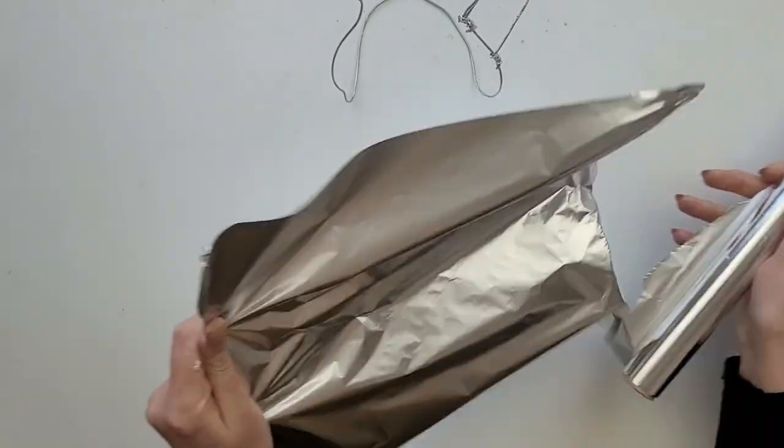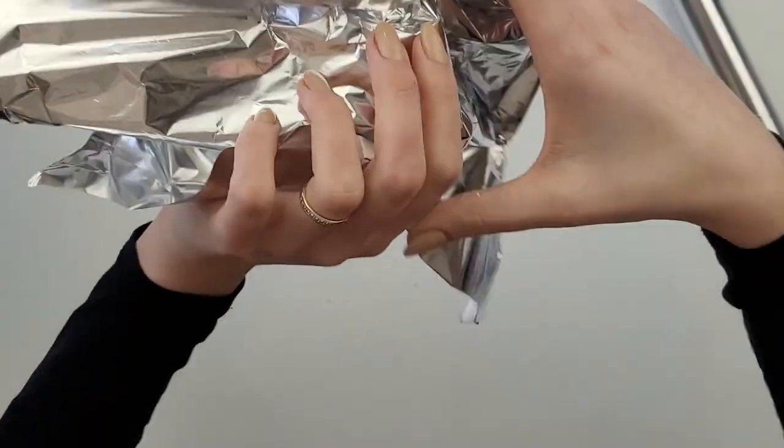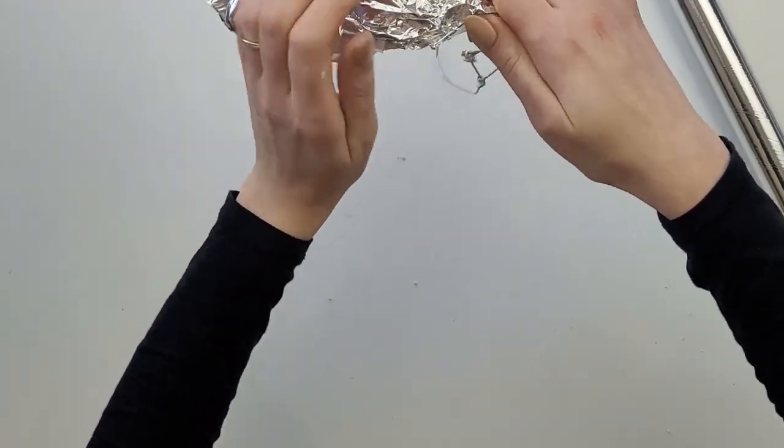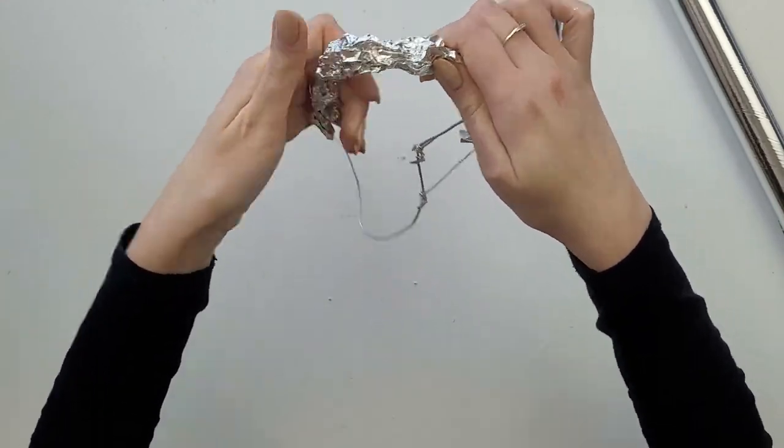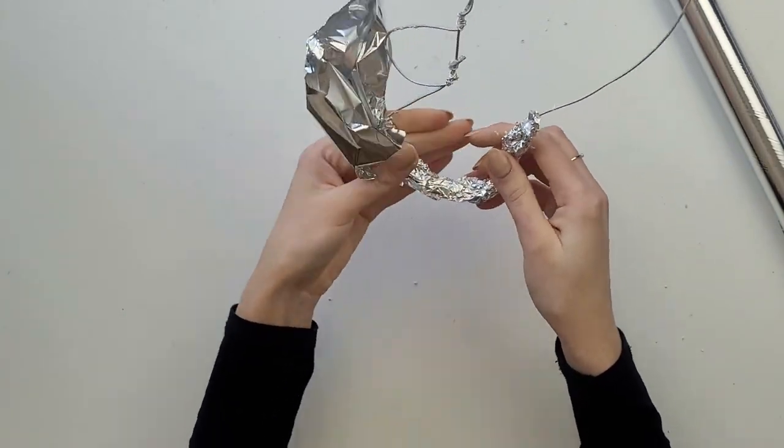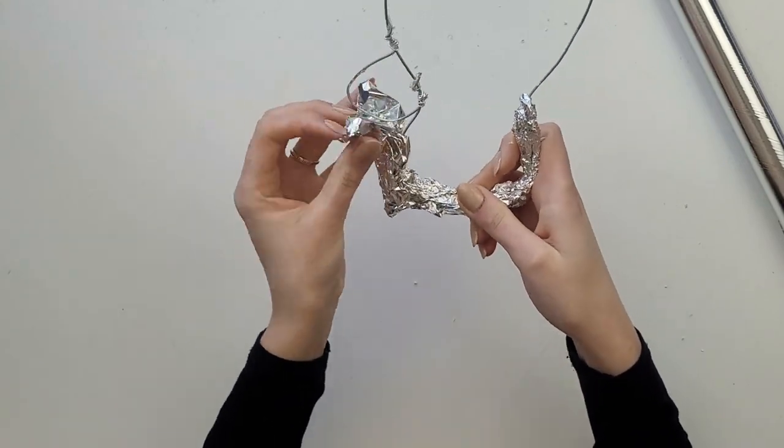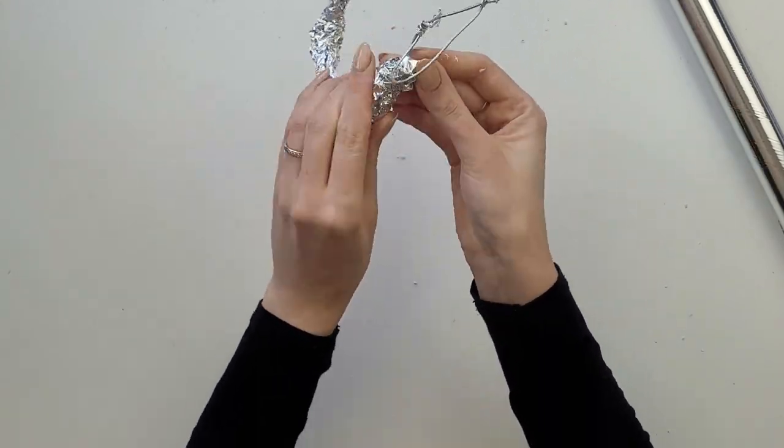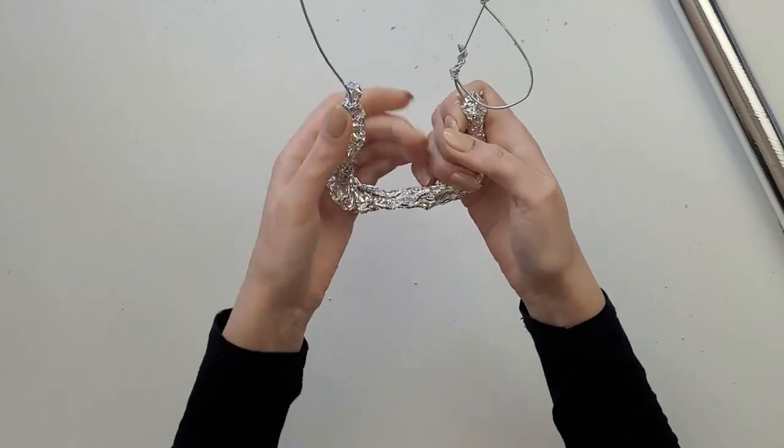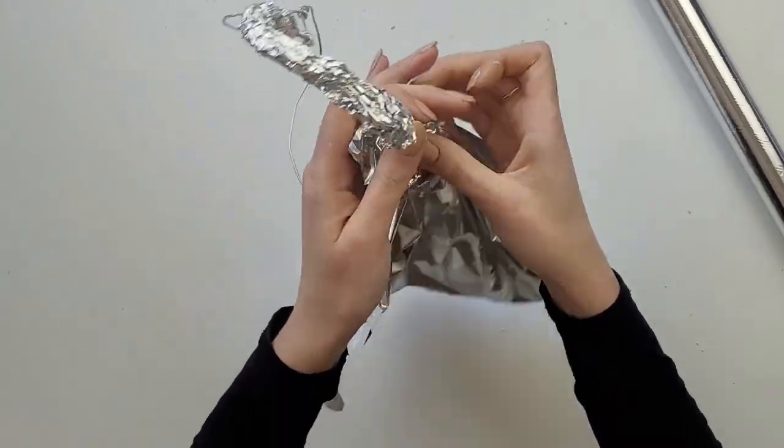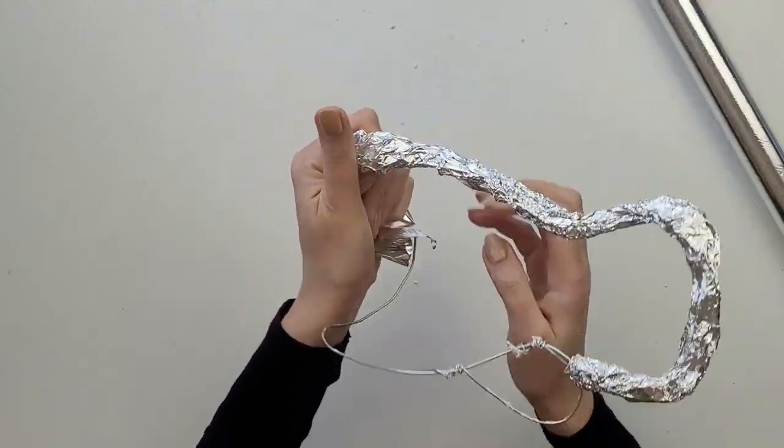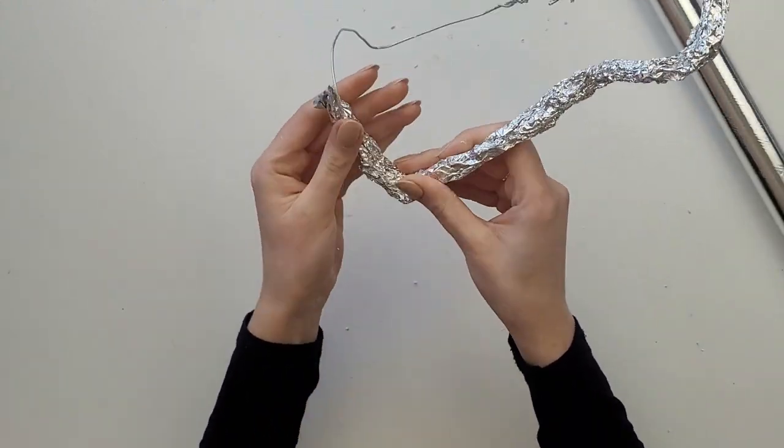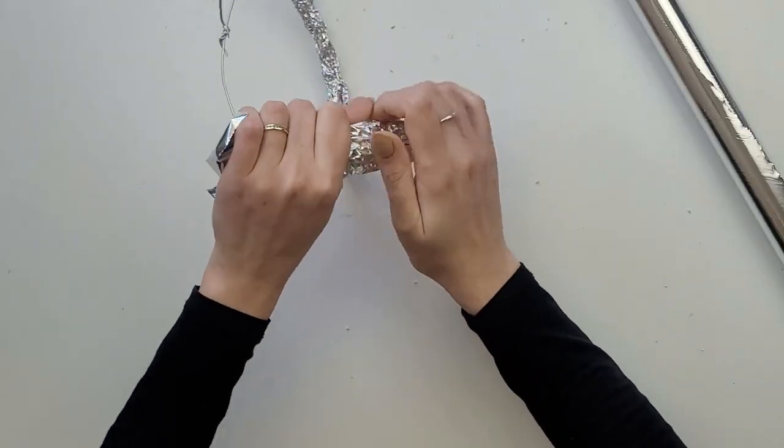Once you're happy with the shape you can take kitchen foil and start wrapping it around the wire. I try to squeeze it to the same thickness all around. I tried to put the clay straight onto the wire. It didn't work very well because the wire was cutting the soft clay. Putting the foil first makes the clay stick better as it has a bigger area to stick to. It also saves your clay and makes the drying process much quicker.